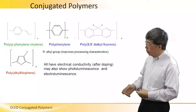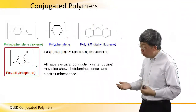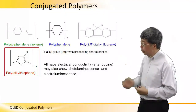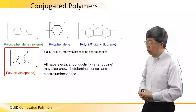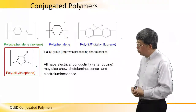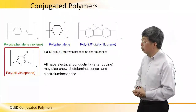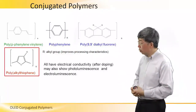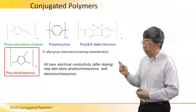The last example is a red or orange emitter, depending on the side chain. It's called polyalkyl thiophene. This polymer is important because it was widely studied in the early days of OLED technology. Thio means it consists of sulfur.